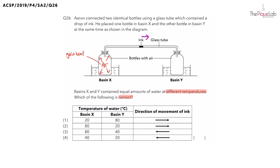So, let's write that down. The air must gain heat from the warmer water placed in Basin X. So, when the air gains heat and expand, this means that the air is going to occupy more space. The air will occupy more space, causing the air to enter the glass tube and push the ink towards the right.